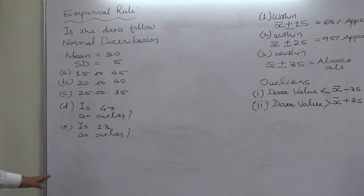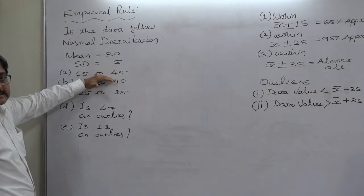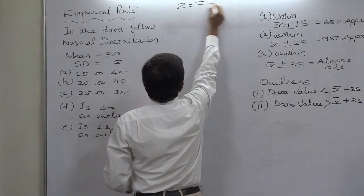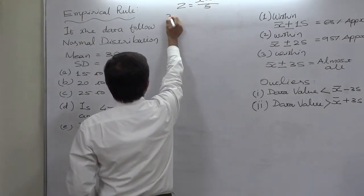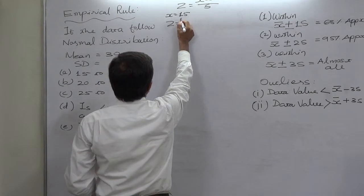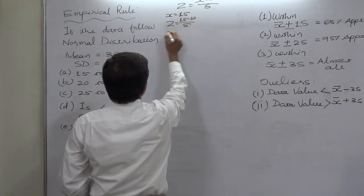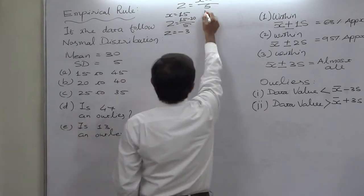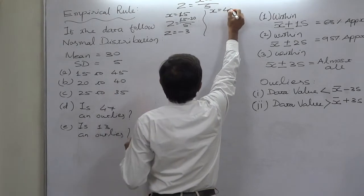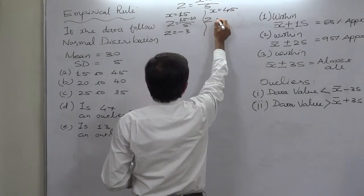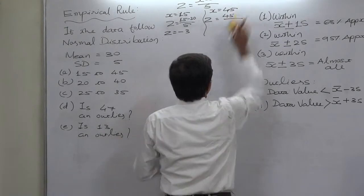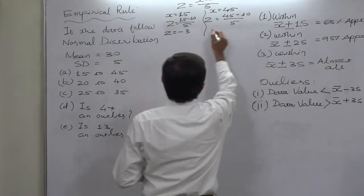First, we calculate Z scores using Z = (X − mean) / standard deviation. For X = 15: Z = (15 − 30) / 5 = −3. For X = 45: Z = (45 − 30) / 5 = +3.